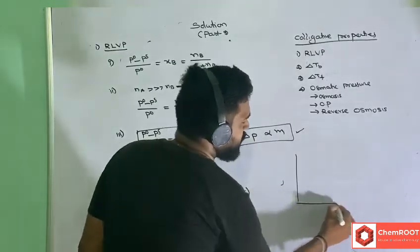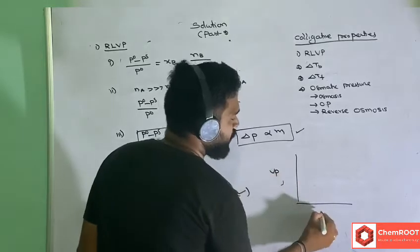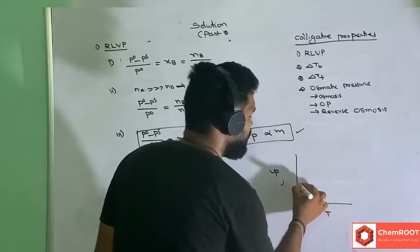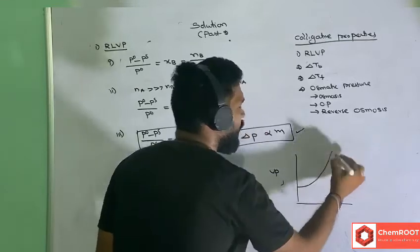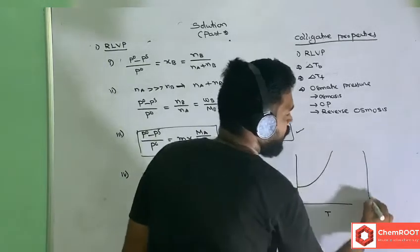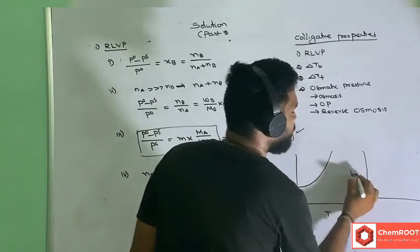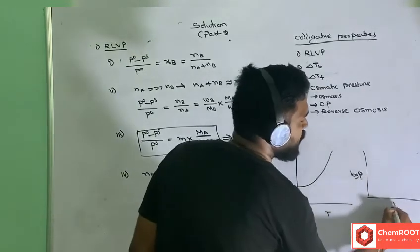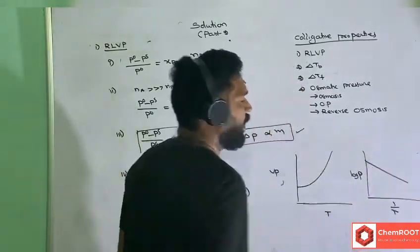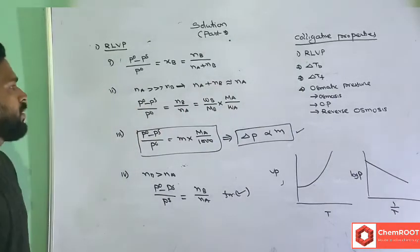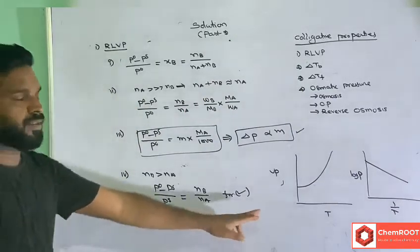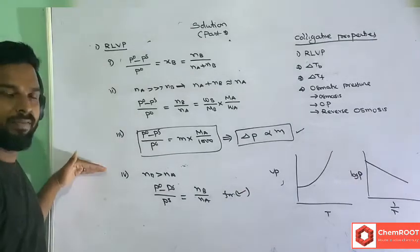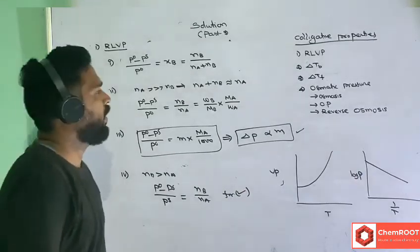For graph-based questions, you should also know: vapor pressure versus temperature gives one type of curve, and log(vapor pressure) versus 1/T gives a different linear graph. These two graphs can be important in exam questions. This concludes the relative lowering of vapor pressure concept.